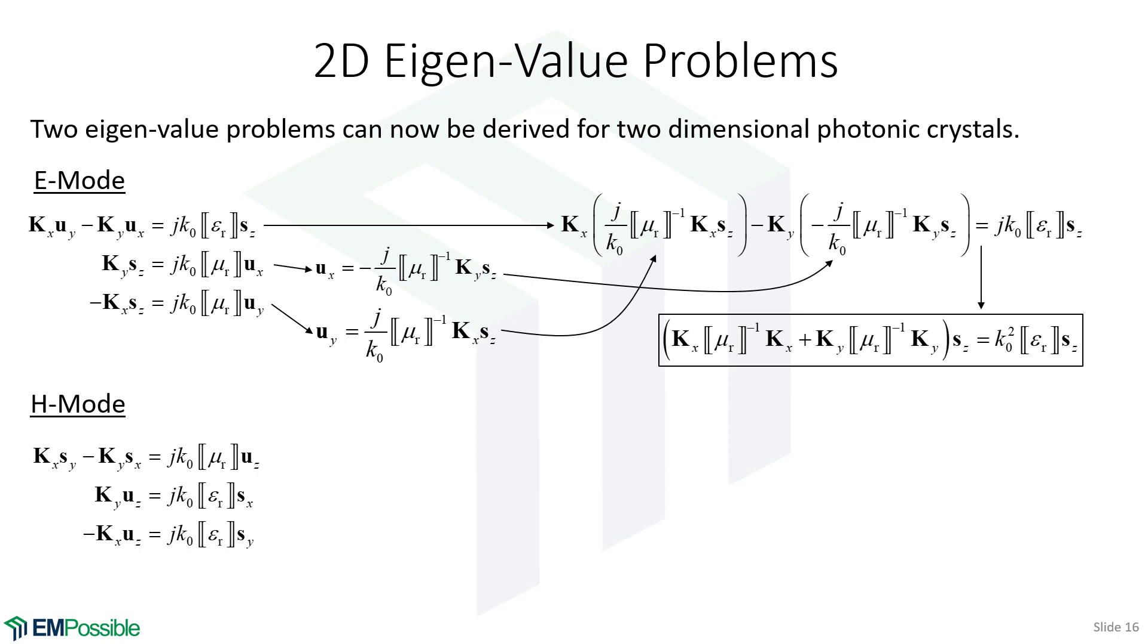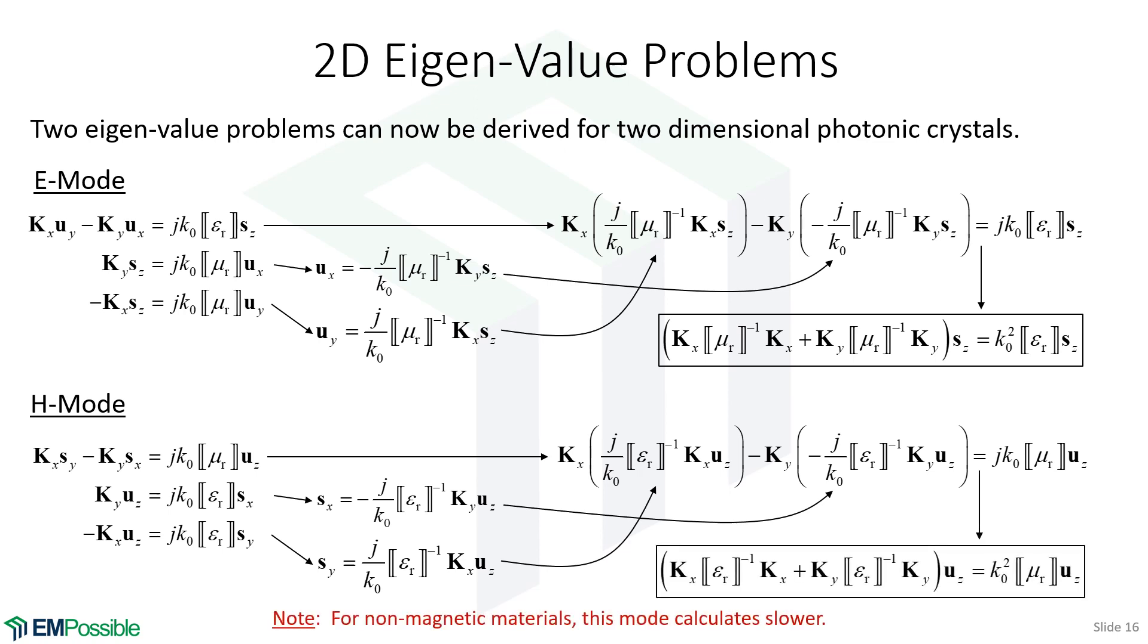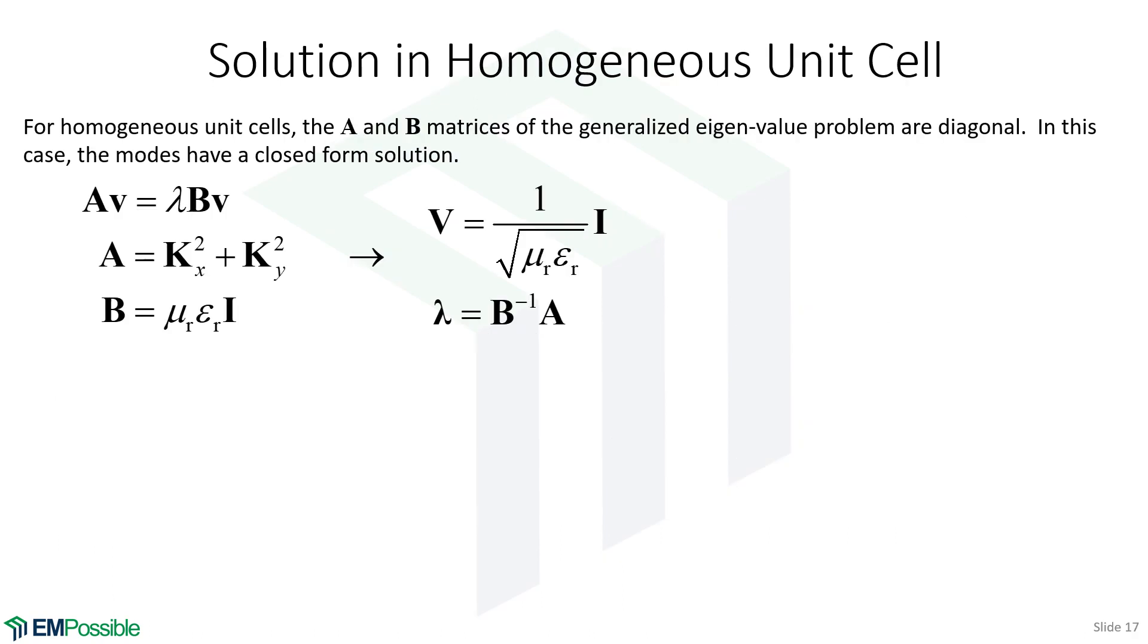We'll repeat this whole thing for the H mode. We will solve its second equation for SX, its third equation for SY, and now we can take these expressions for SX and SY. We can plug them back into the first equation. Now, we have an equation just in terms of UZ. We can multiply this out and simplify, and we end up with our eigenvalue problem in terms of UZ. So, we have two modes. If we want to know everything about a two-dimensional photonic crystal, we are forced to have to solve both of these. We can't solve one and then determine what the solution is in the other one. This is two independent modes that we have to solve both if we care about both.